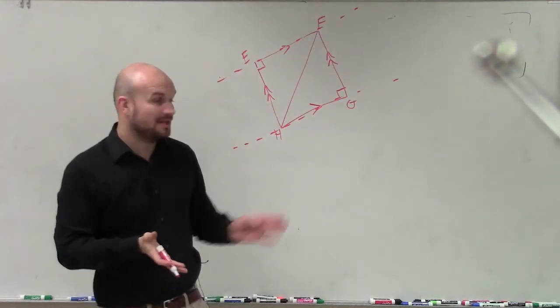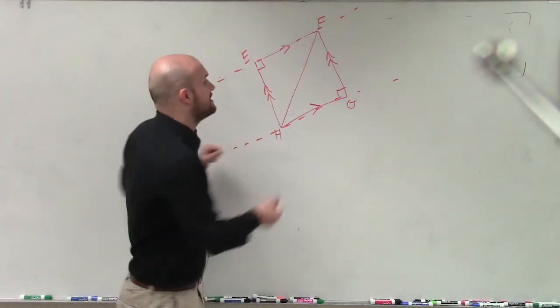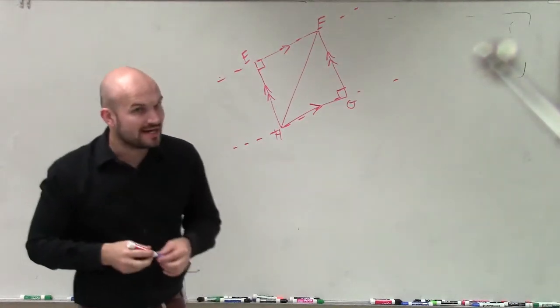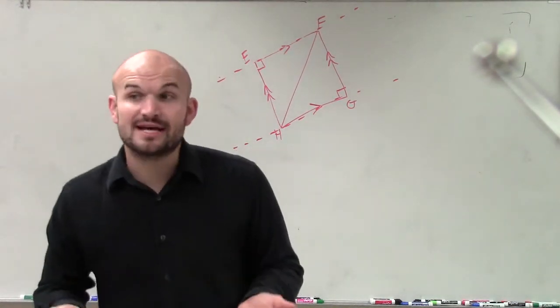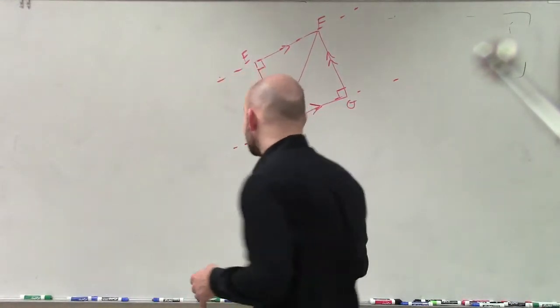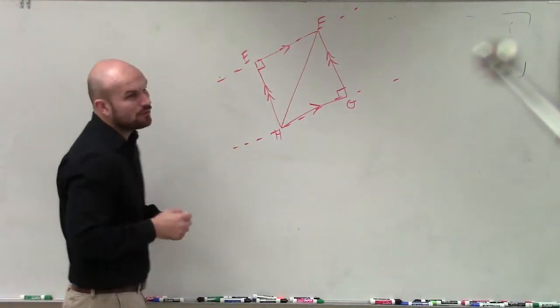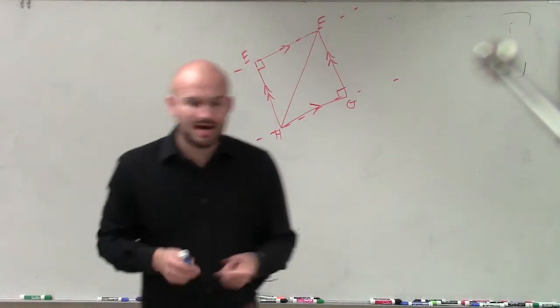And with those parallel lines, I do have a transversal. I have a line that you could say is intersecting those two lines. Since I have a line that's intersecting those two lines, what is so nice about this is now I can say, well, what are my angle relationships with parallel lines?